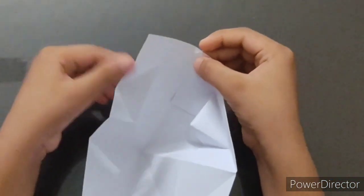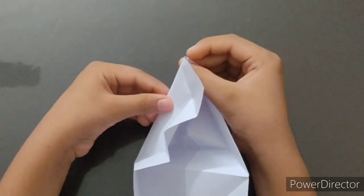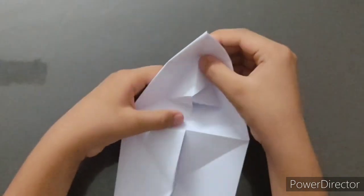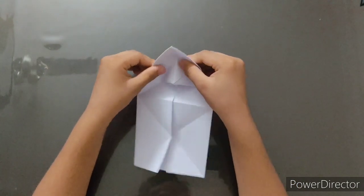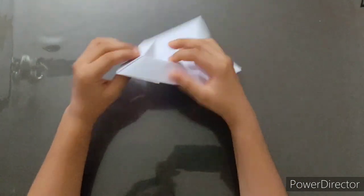Now, using this flap just fold it like this and fit it inside. Now, the front part of our phone stand is ready.